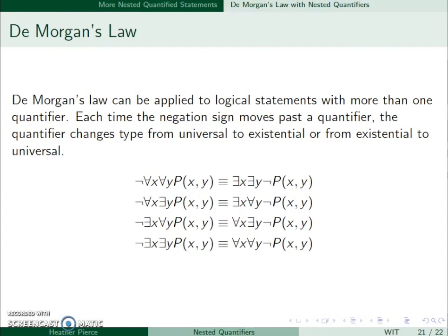So here are some examples. In the first case, ∀x∀y P(x,y), it would change both of those universal quantifiers to existential and then it would negate the predicate.